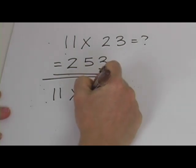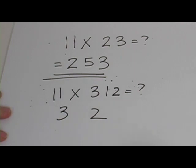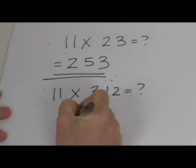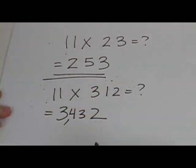11 times, say, 312. You take the 3 and the 2, and then what's 1 plus 2? It's 3. What's 3 plus 1? It's 4. The answer is 3432.